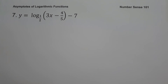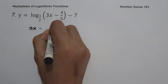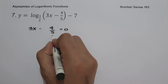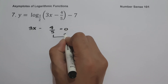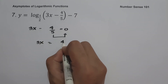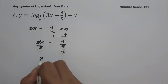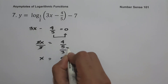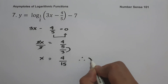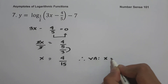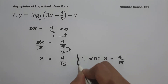On our last example: y equals log base 1/2 of (3x minus 4/5), minus 7. To solve for the vertical asymptote, let us equate the argument equal to zero. So we have 3x minus 4/5 equal to zero. Moving negative 4/5 to the other side gives us 3x equals 4/5. Dividing both sides by 3, we get x equals 4/15. Therefore, our vertical asymptote is x equals 4/15, and this will be our answer.